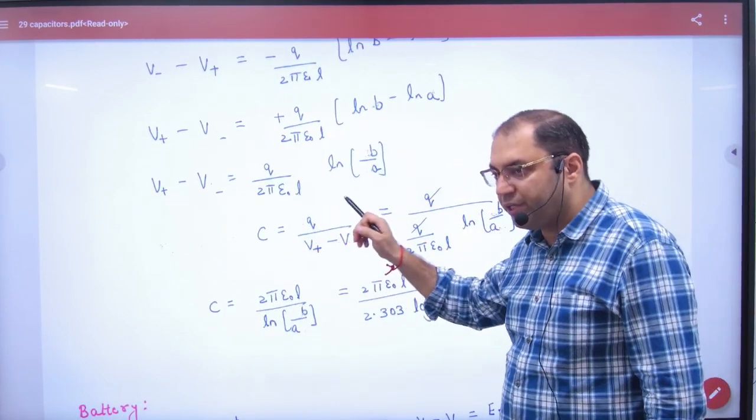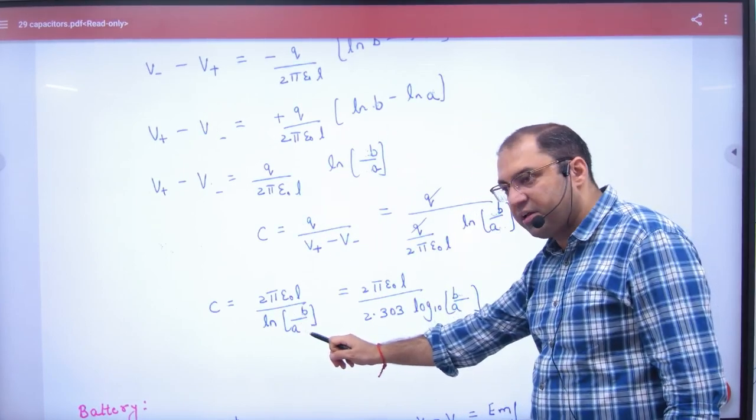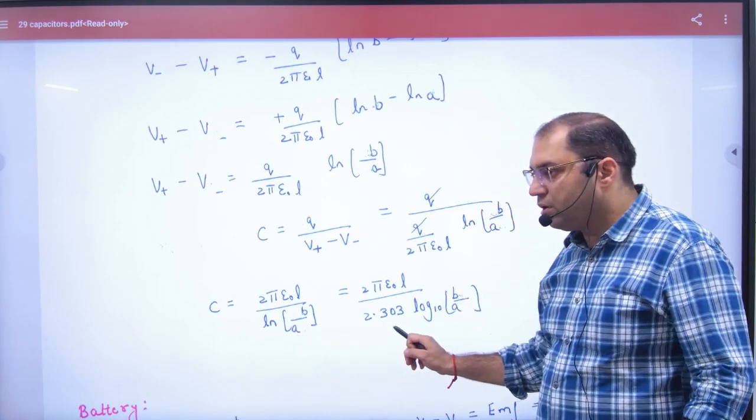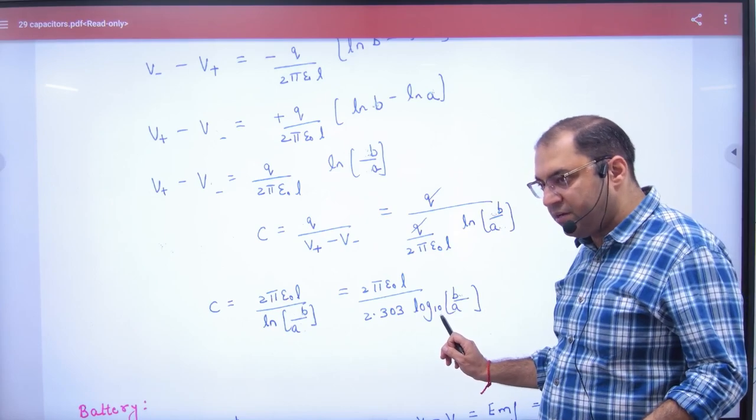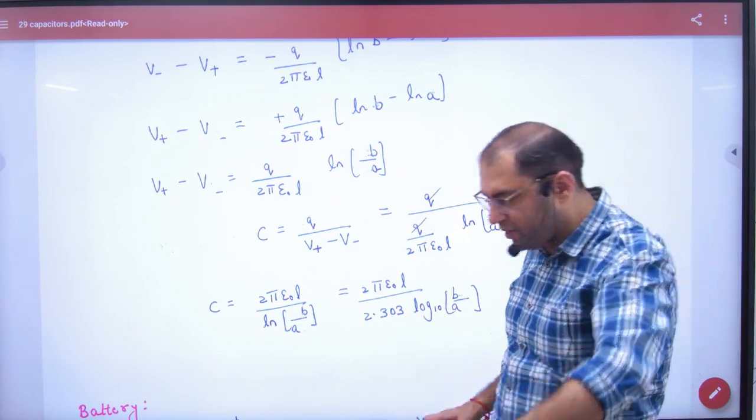So what will happen? Q divided by potential difference. Natural log E, and if it is log base 10, then multiply by 2.303. This is the formula for cylindrical capacitor.